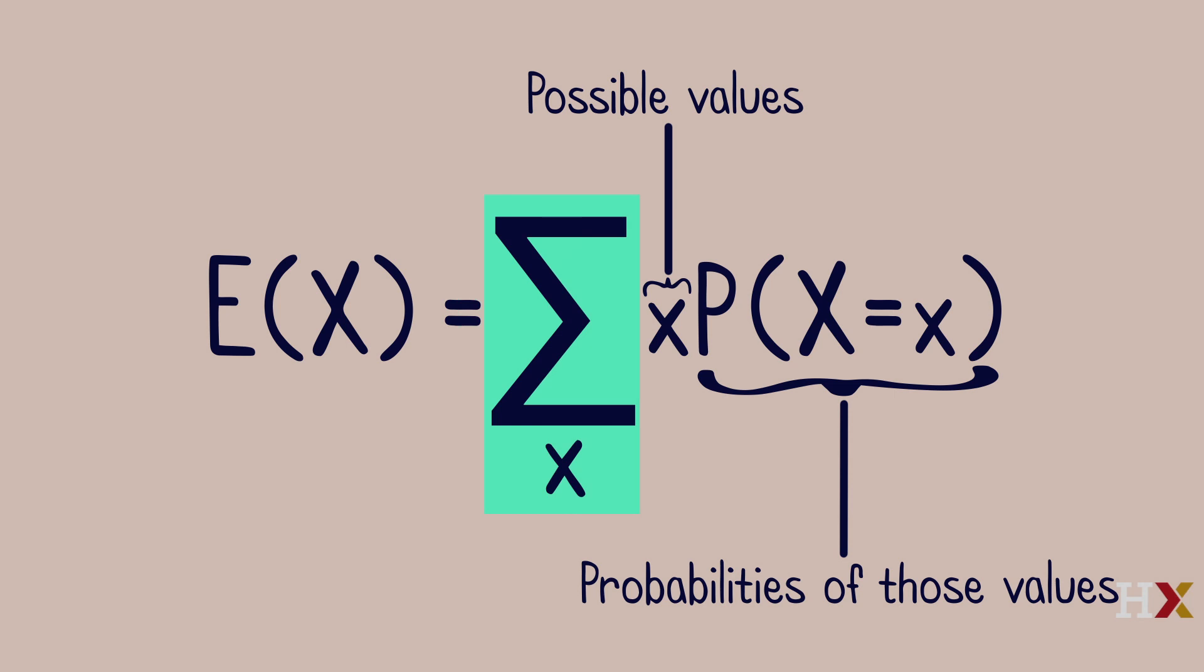E of X equals the sum over X of X times the probability that big X equals little X. Each possible value of X gets weighted according to its probability.